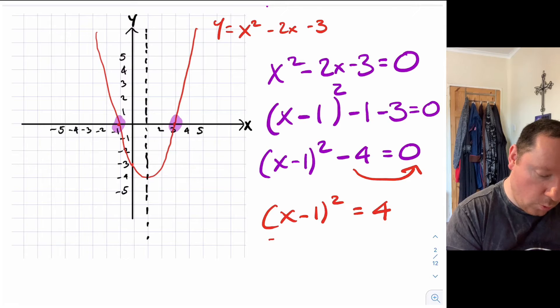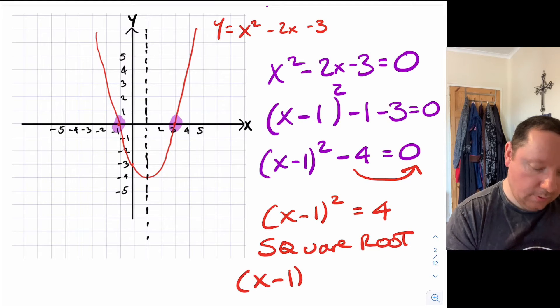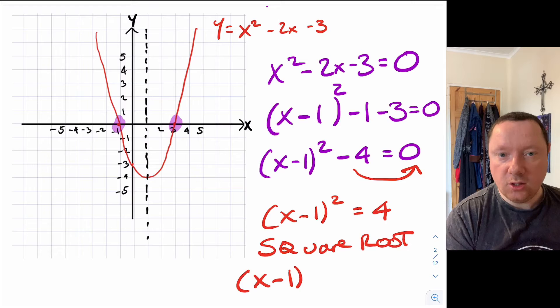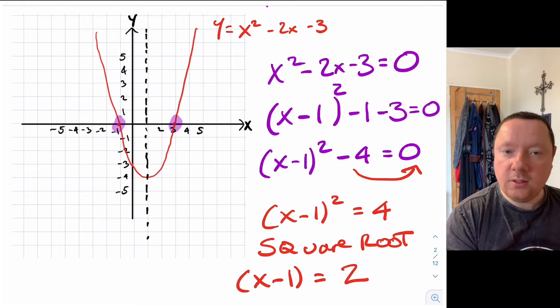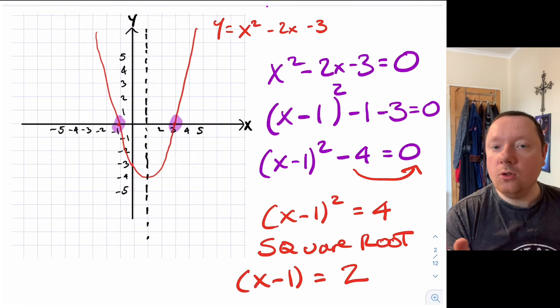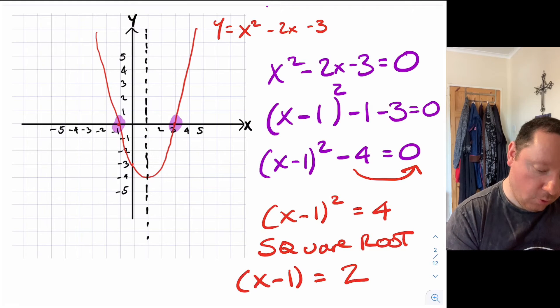So I can square root both sides. So at this stage you always square root. So I'll get x minus 1 on this side, square root of something squared is just itself, equals now 2. But remember it's 2 but it could also be negative 2 because negative 2 times negative 2 is also 4. So you always get 2 answers.